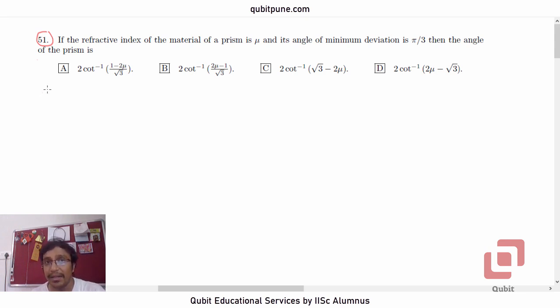This is based on ray optics. If the refractive index of the material of the prism is μ and its angle of minimum deviation is π/3, then the angle of the prism is—and we have got four options, all of them involve quaternors.